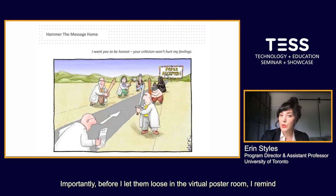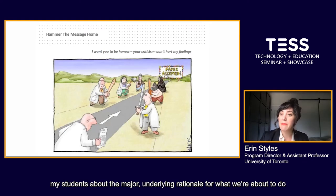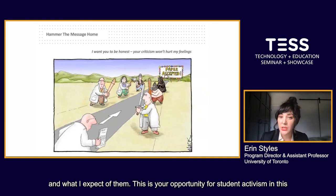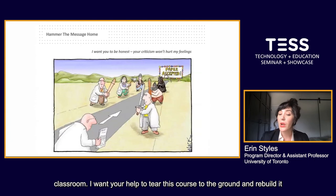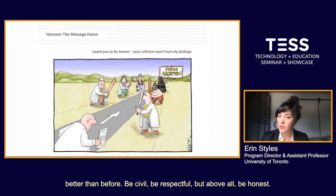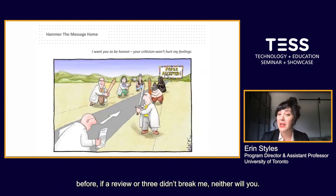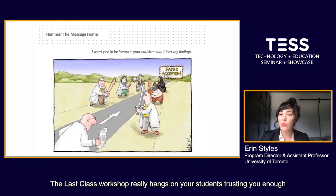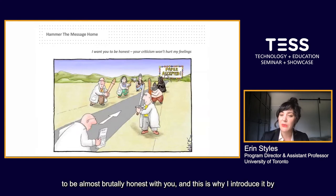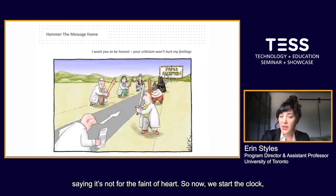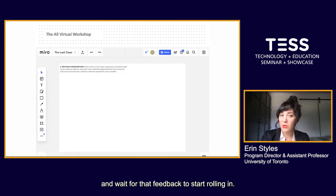The only rule is: keep it honest, keep it respectful, and keep it all on the virtual poster. There's no discussing out loud at this stage. I want to make sure that all of the students get all of their comments down in writing, since there's going to be plenty of time for discussion later. Before I let them loose in the virtual poster room, I remind my students about the major underlying rationale and what I expect of them: 'This is your opportunity for student activism in this classroom. I want your help to tear this course to the ground and rebuild it better than before. Be civil. Be respectful. But above all, be honest. You won't be hurting my feelings — I've published papers in peer-reviewed journals. If reviewer 3 didn't break me, neither will you.' The Last Class Workshop really hangs on your students trusting you enough to be almost brutally honest with you.